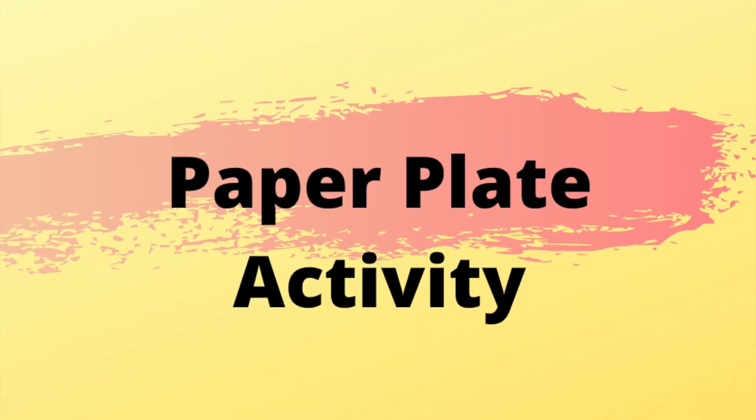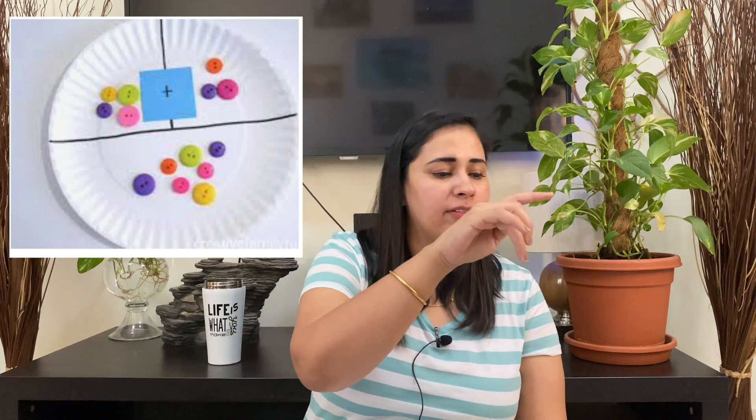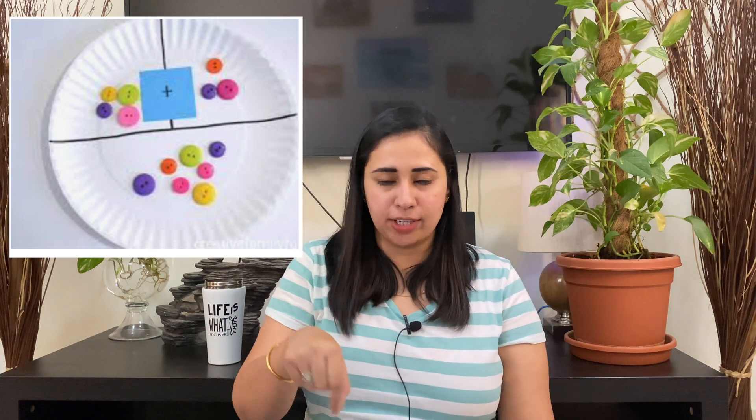For the next activity, take a partition plate. In one section put two balls, in the second section put three balls, and ask the child what the total will be in the third section. The child counts all the balls — one, two, three, four, five — and writes five, understanding that two plus three equals five. This is also a very good method for teaching addition.